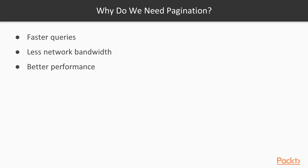Now these first three points are more on the technical side. But what about the user side? Well, pagination leads to concentrated content for the client. Because if we have 1,000 records, we don't want to show them all at once — the client can get overwhelmed by that amount of data. So what we want to do is just give him some chunks of data which he can read and enjoy, and then if he wants more, we will give him more.